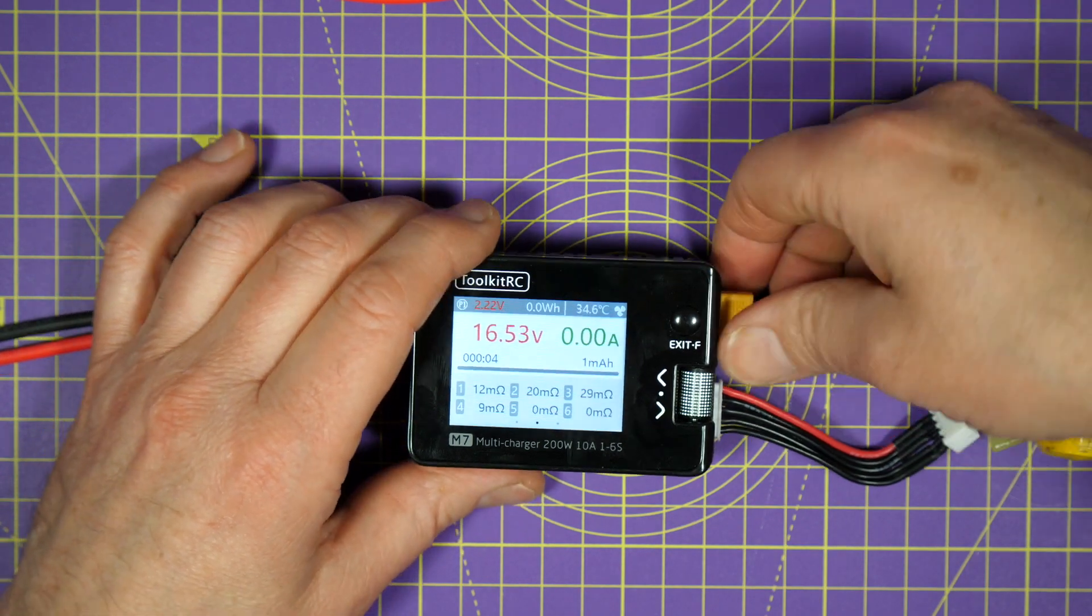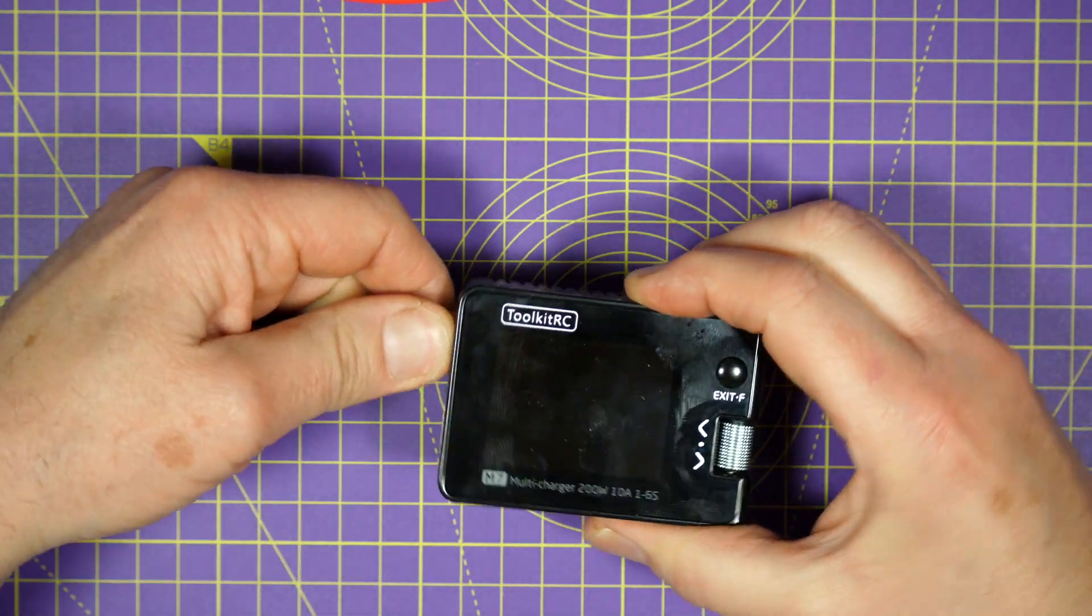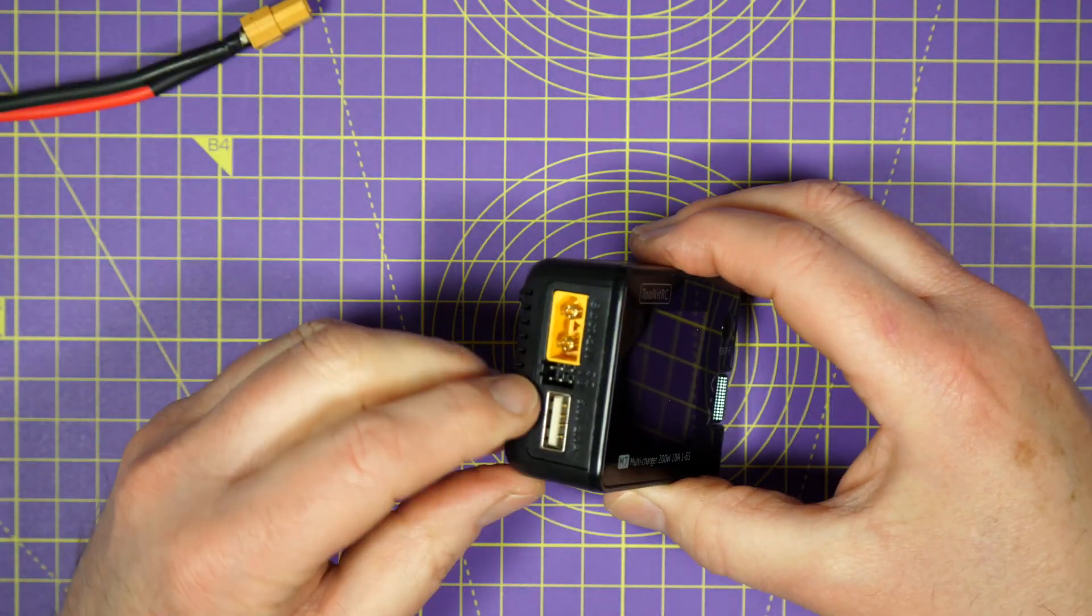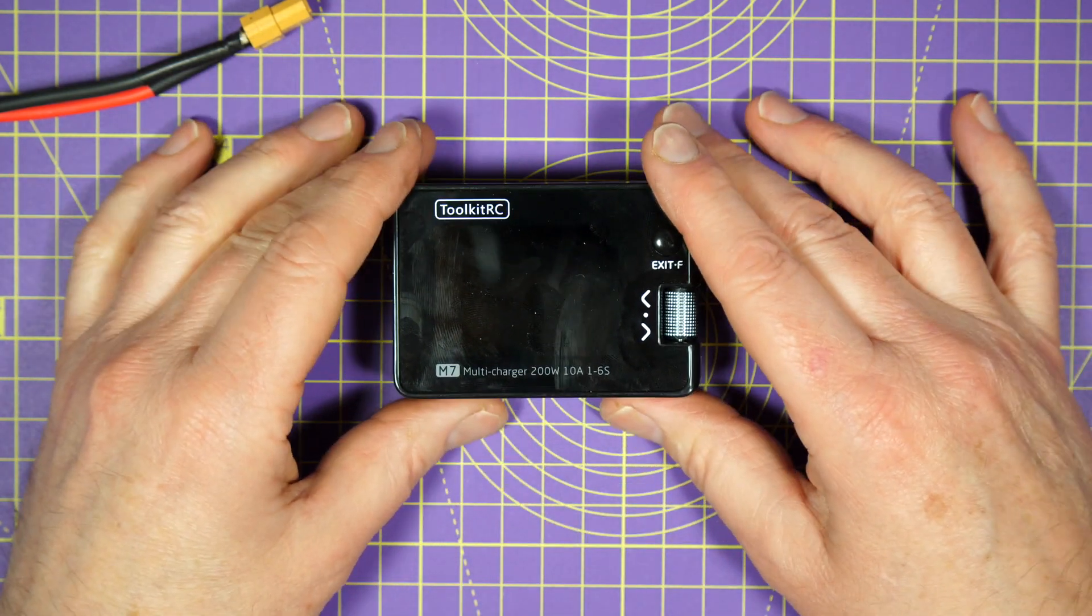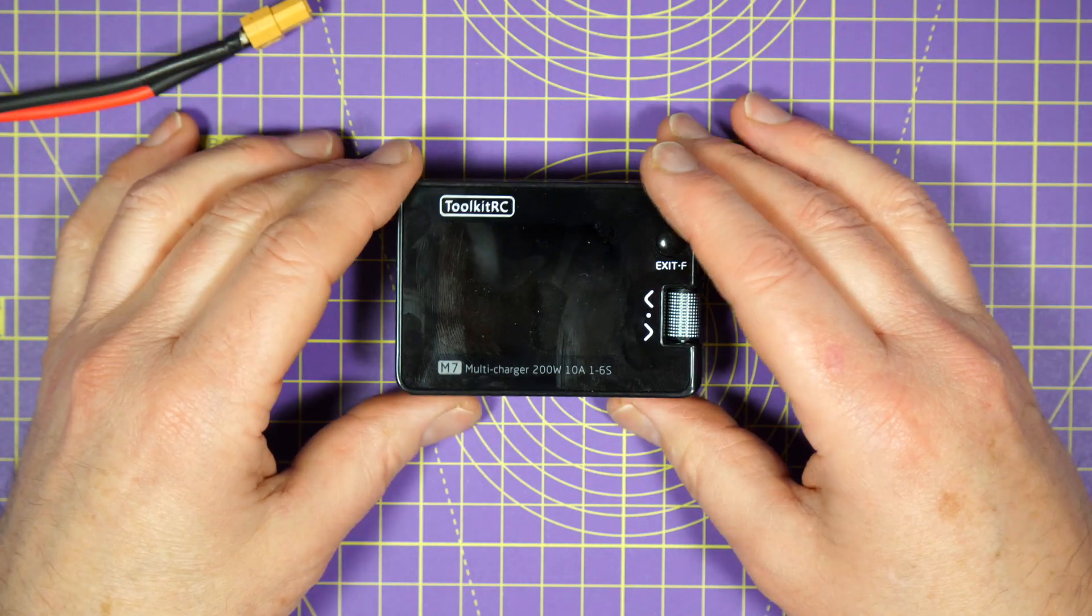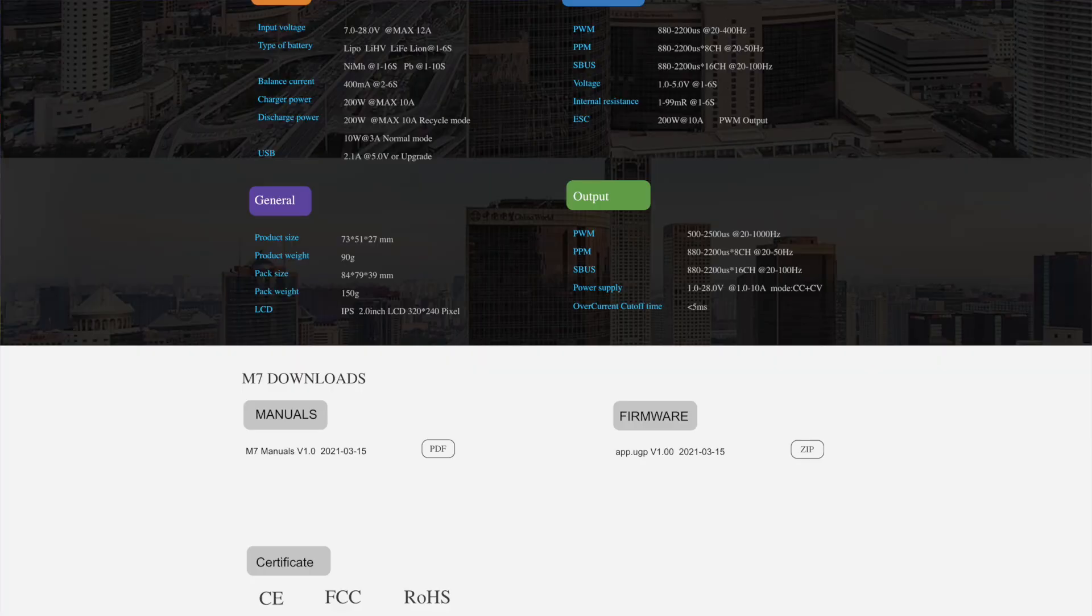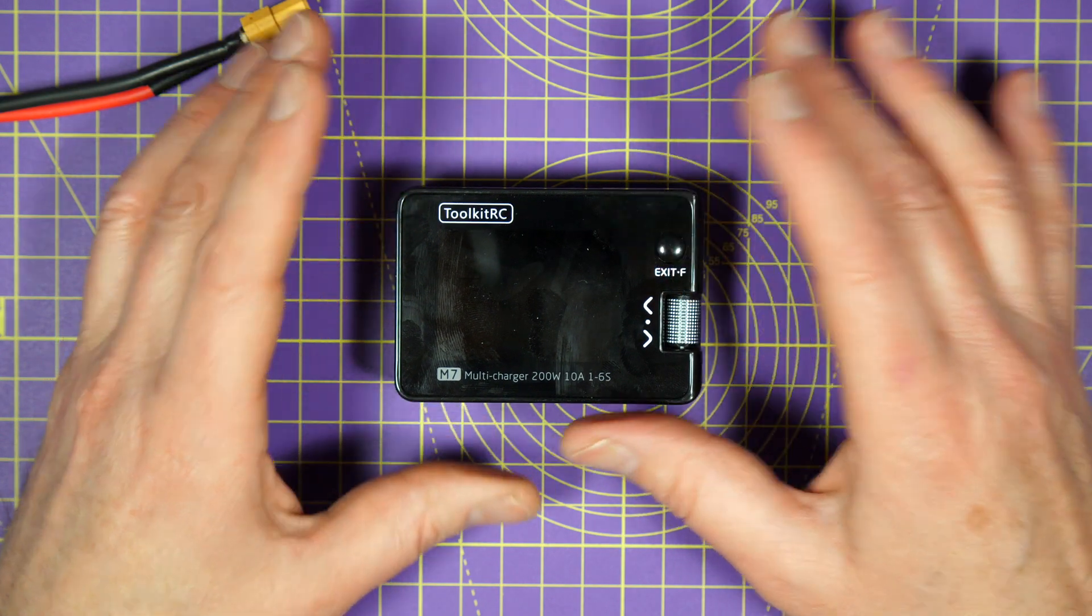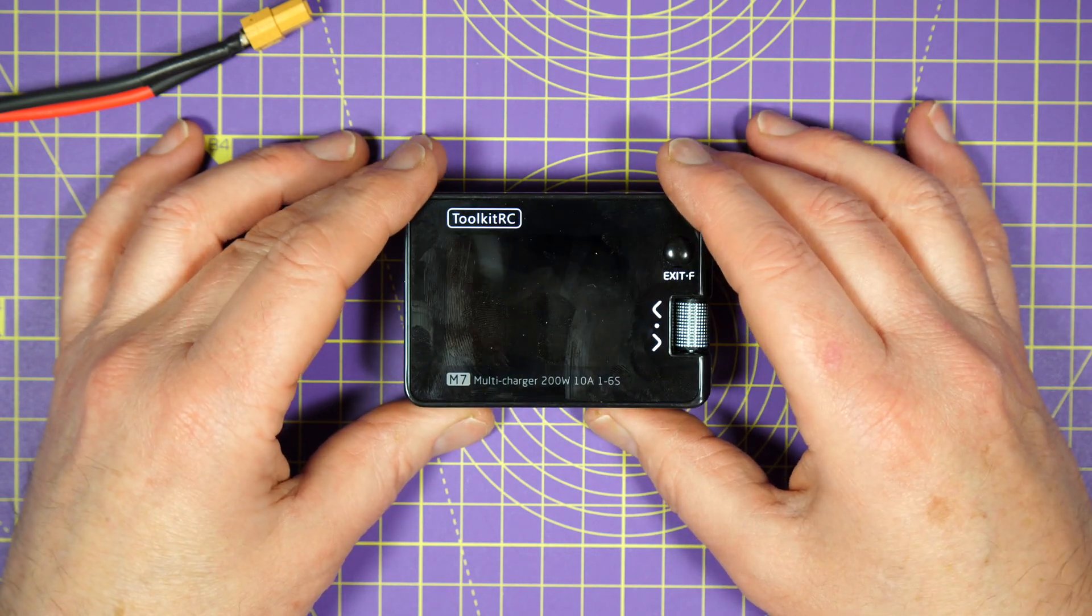Now, you can plug the USB here into your computer, and this box will appear as an external drive. Just grab the new firmware download from the Toolkit RC website and simply drag the file onto the drive. Recycle the power on here, and bish bash bosh, you've upgraded the firmware. It is so simple. It's really very nice.